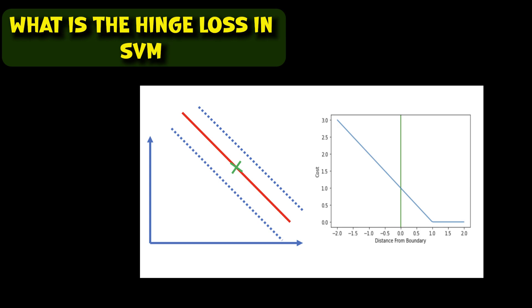What is the hinge loss in SVM in machine learning? The hinge loss is a loss function used in support vector machine algorithms for binary classification programs. This hinge loss is a very specific type of cost function that incorporates a margin or distance from the classification boundary into the cost calculation.